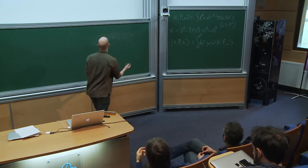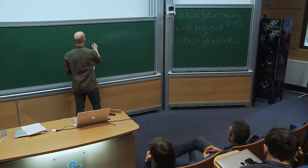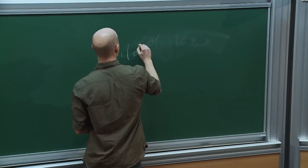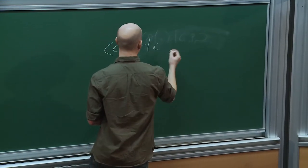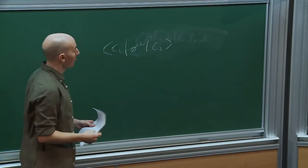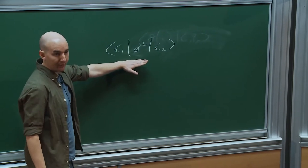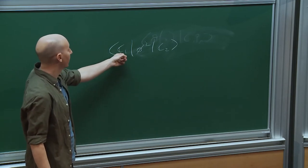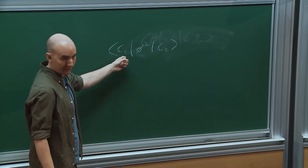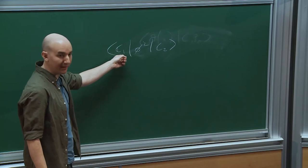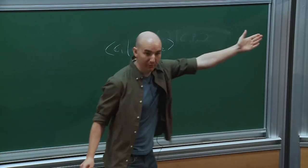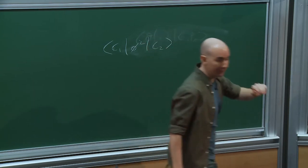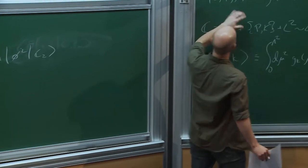There is a question about whether computing matrix elements involving vertex operators in a strongly coupled CFT via Fourier transforms gives finite results. With the right Wightman prescription — performing the Fourier transform of the Wightman correlator — it's fine as long as the operator dimension is bigger than d/2. For operators below that threshold, like phi squared in 3D, you encounter IR divergences when integrating over momenta of the partons, which is a real technical complication in 3D.